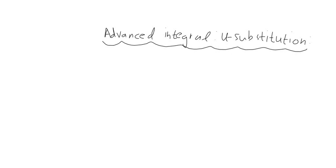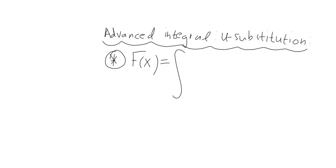Let's define a certain formula here. Capital F of X is our antiderivative — that's what an integral is equal to. It is equal to the integral of f of g of X, times G prime of X dx.